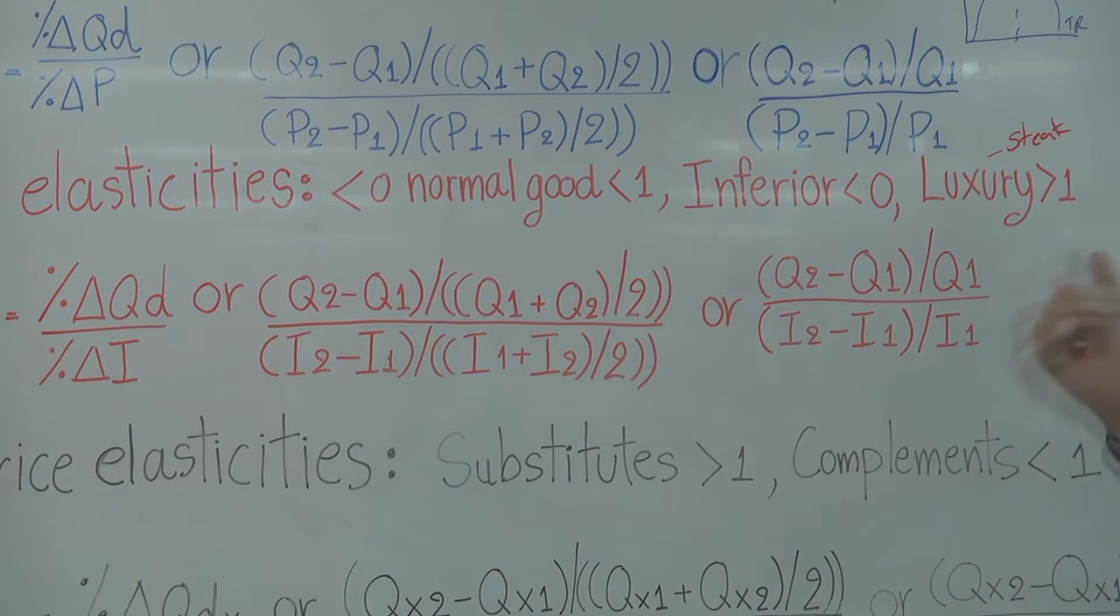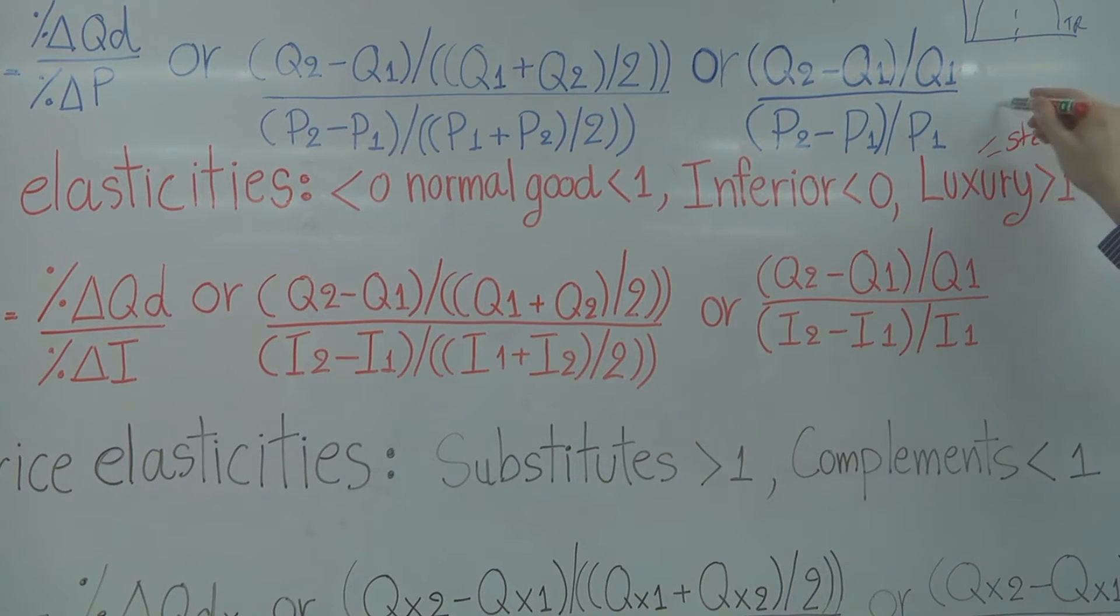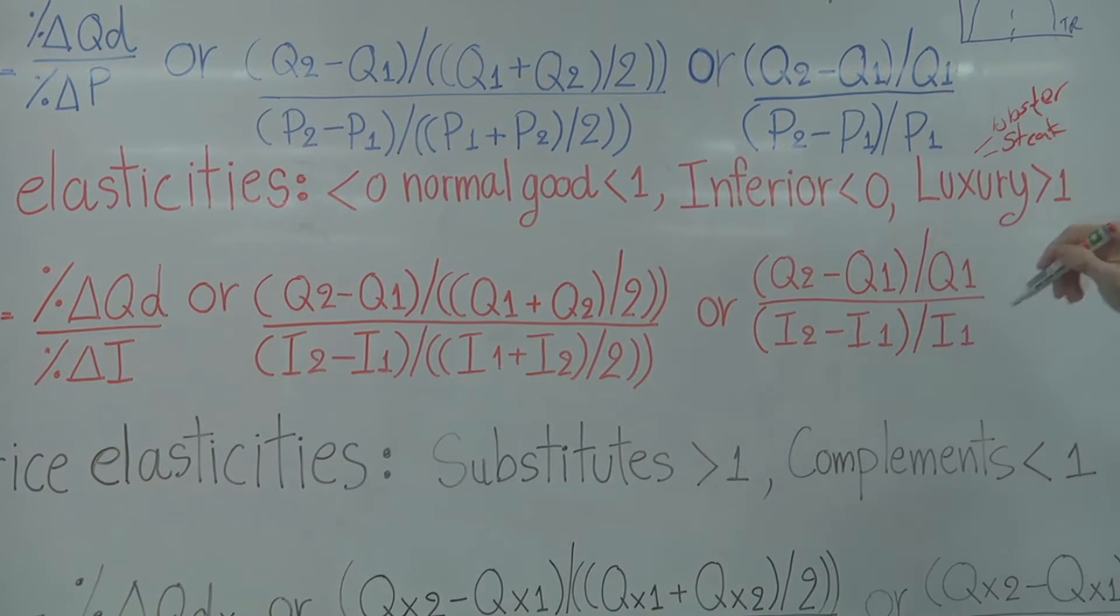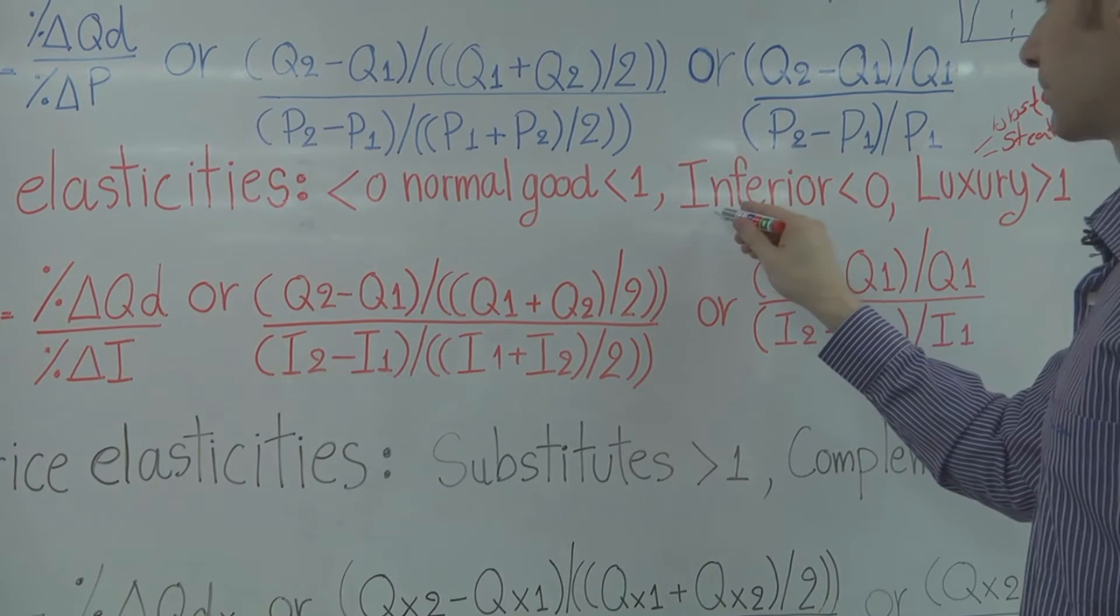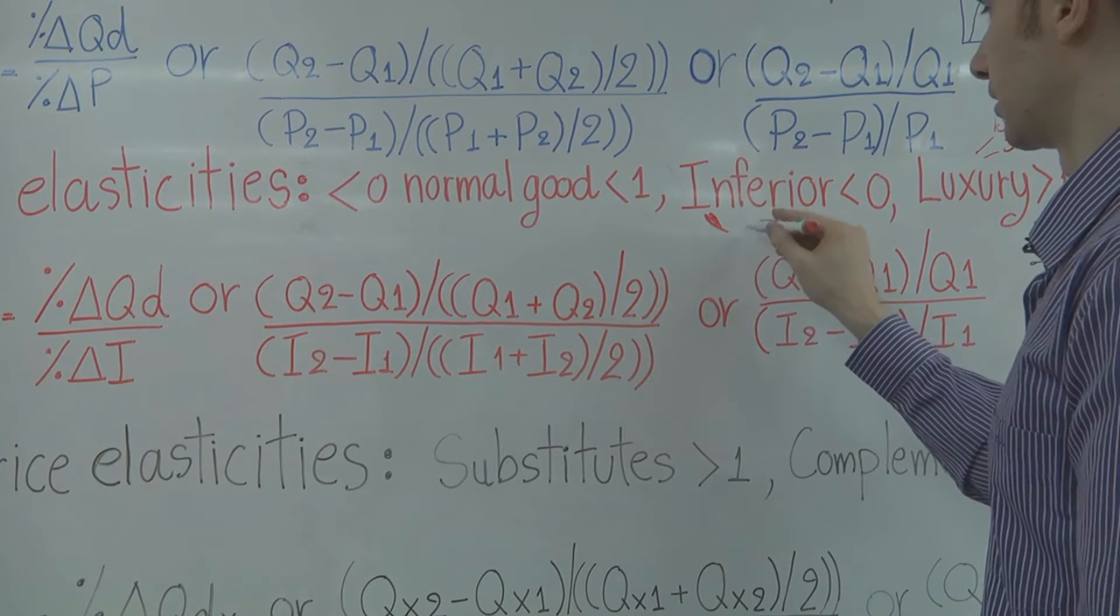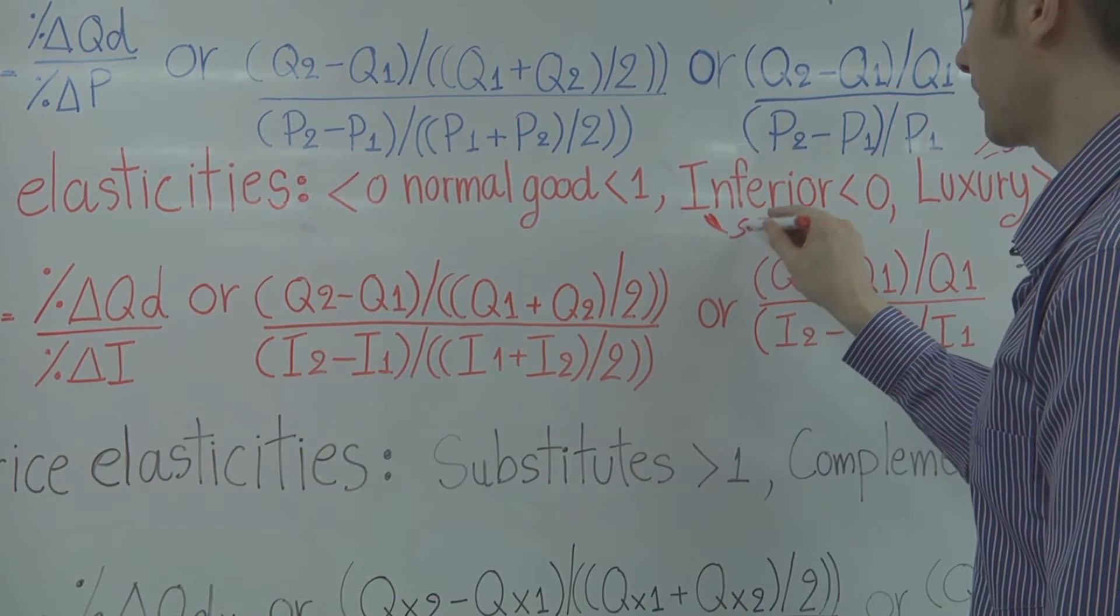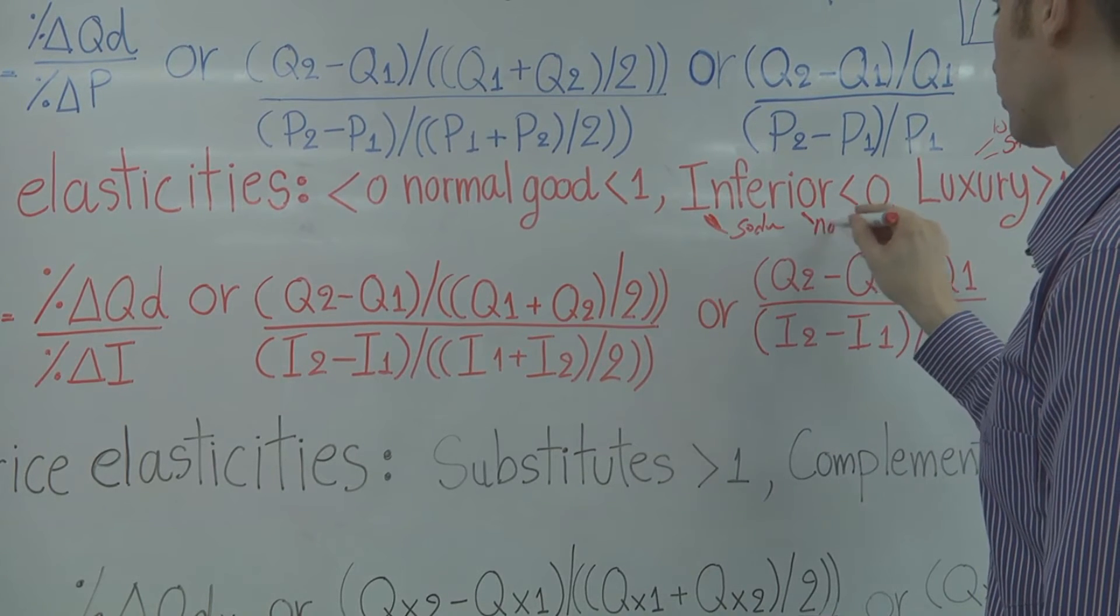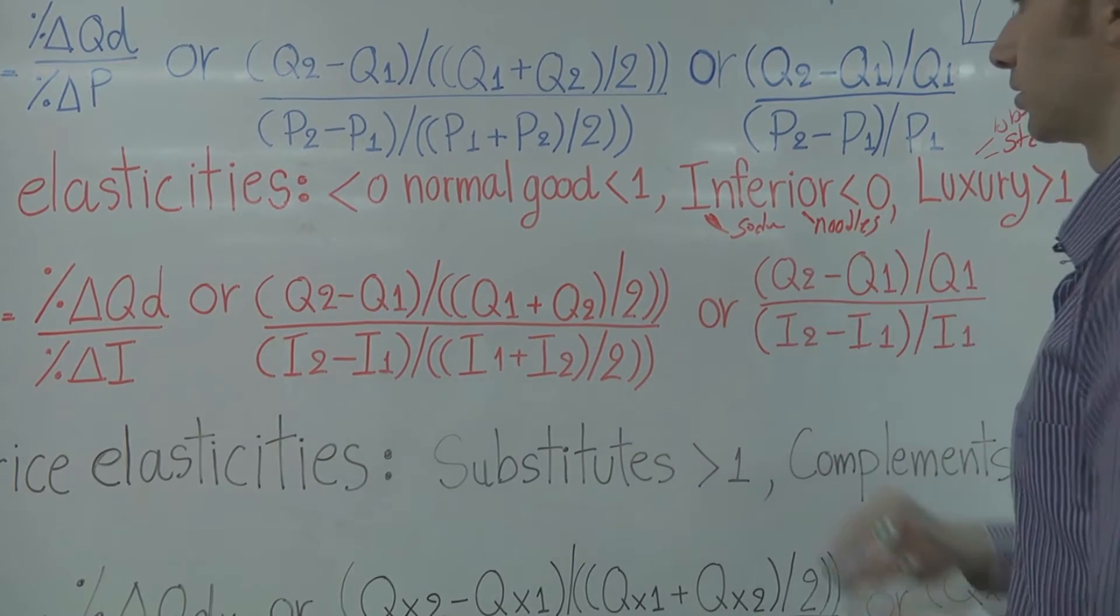Maybe a luxury good would be like steak. So when my income goes up, I'll eat more steak, more lobster. Inferior goods might be maybe like soda pop or noodles and your microwave.